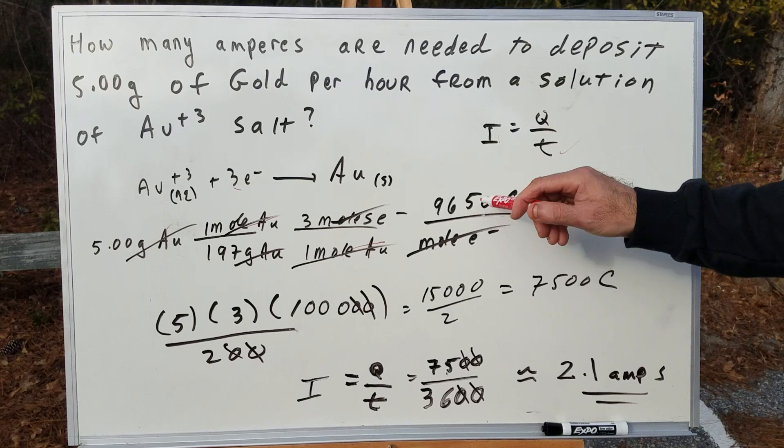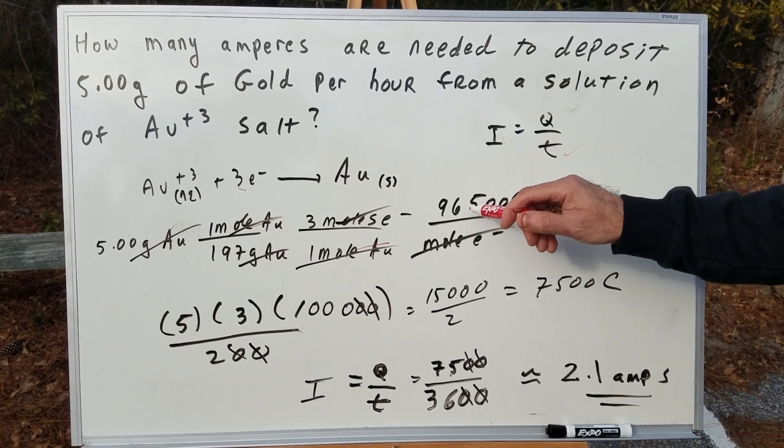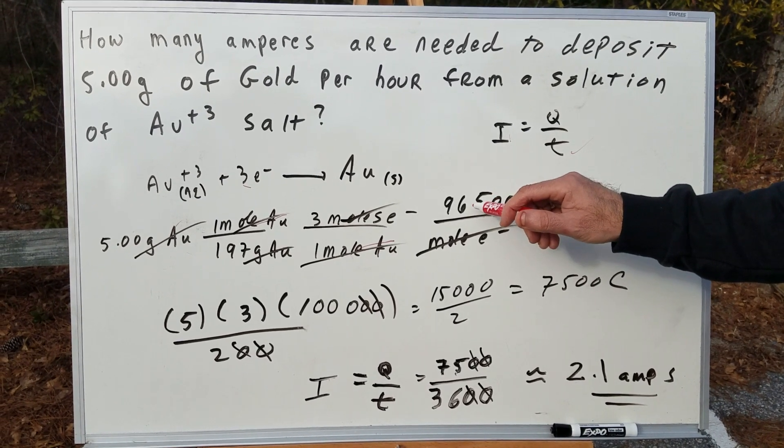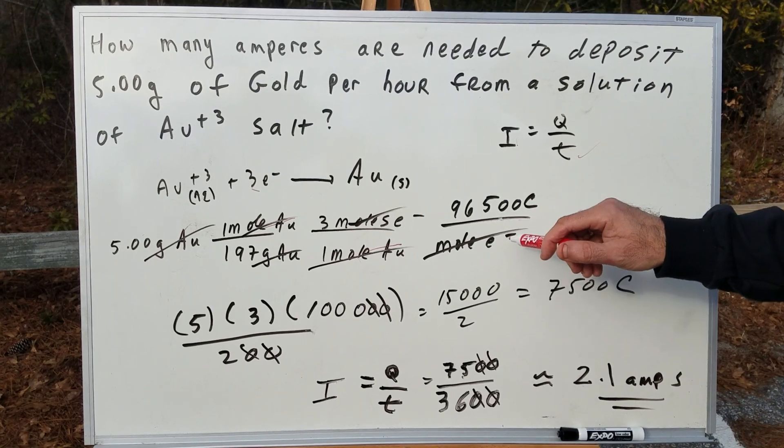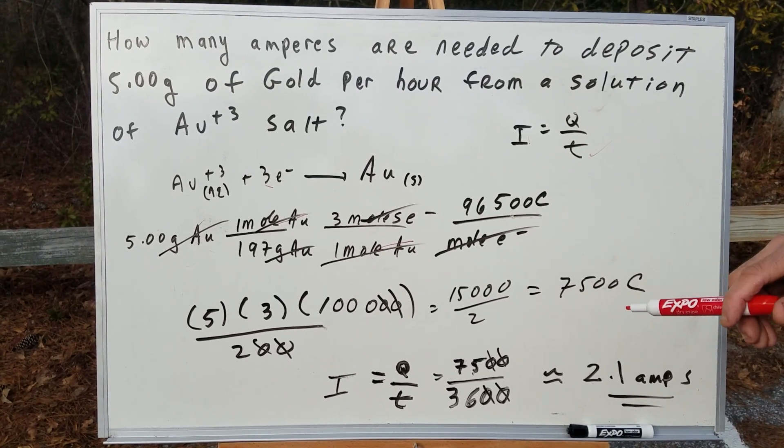And finally, the DAT would give you this number, but 96,500 coulombs equals a mole of electrons. So now I got my Q.